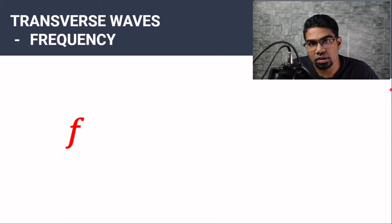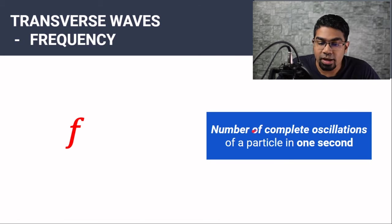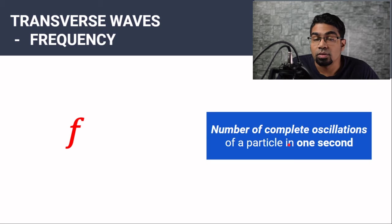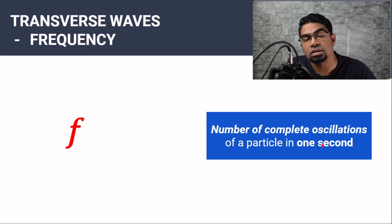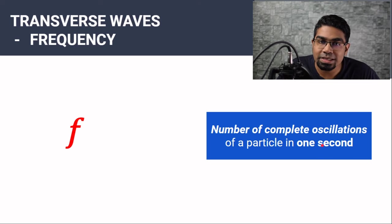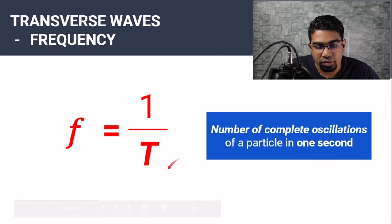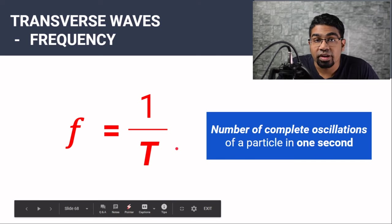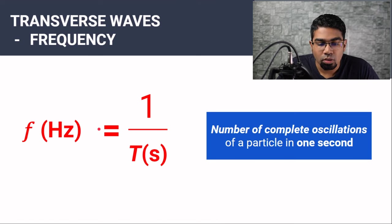Then we have frequency. Frequency is defined as the number of complete oscillations of a particle in one second — how many oscillations are completed in one second. The frequency can be represented by the reciprocal of the period: one over period. When the period is in seconds, the unit for frequency is per second, or hertz (Hz).